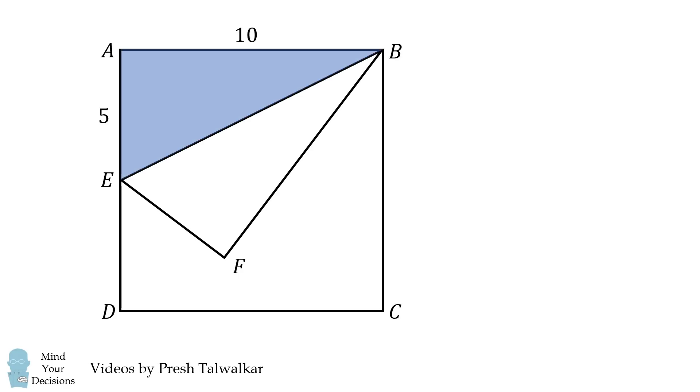Next, consider the right triangle AEB. We can calculate its hypotenuse EB using the Pythagorean theorem. EB is equal to the square root of 5 squared plus 10 squared, which means EB is equal to 5 times the square root of 5.